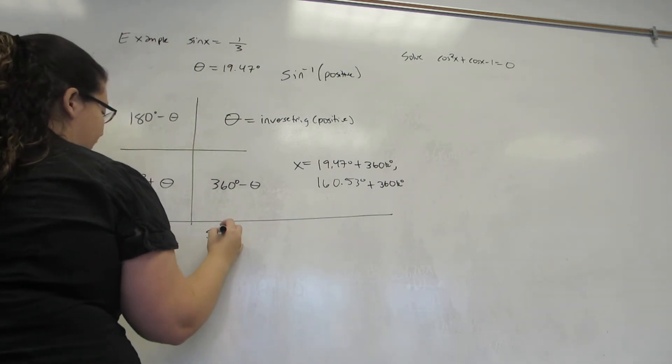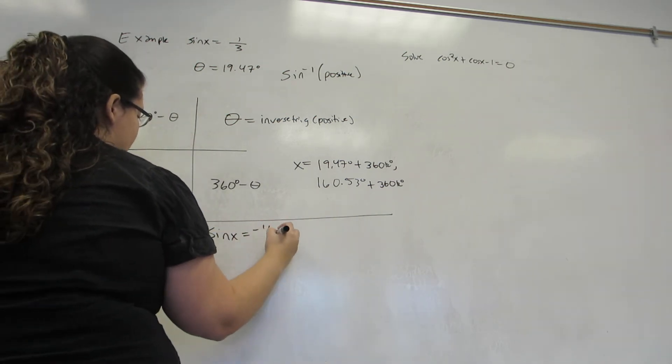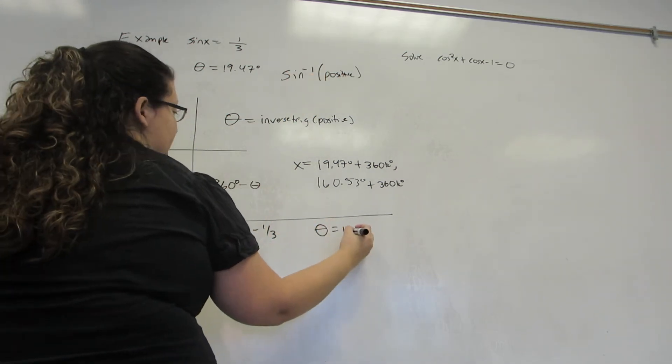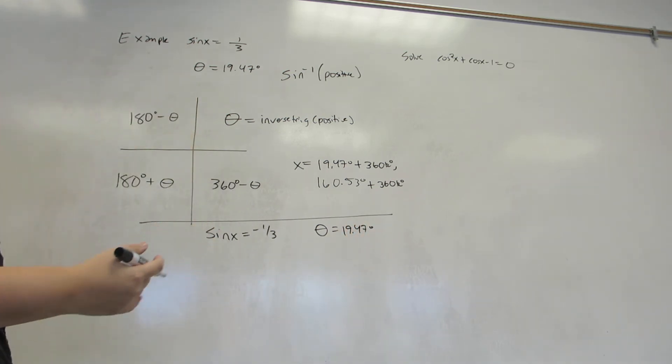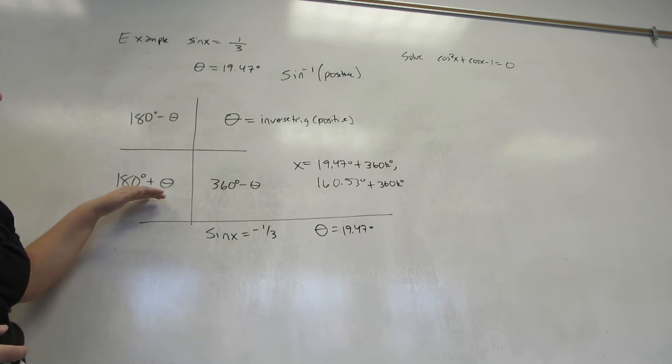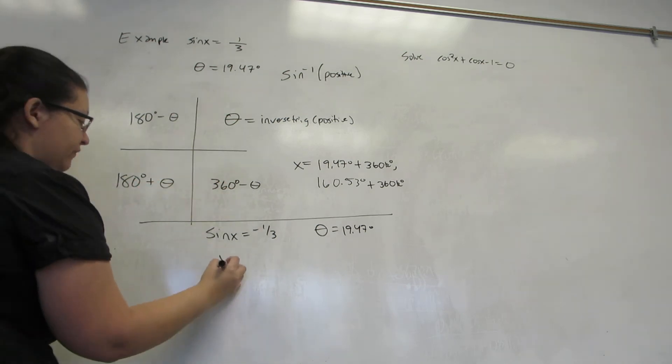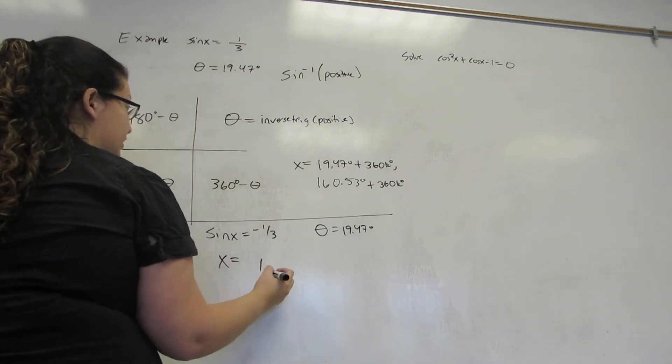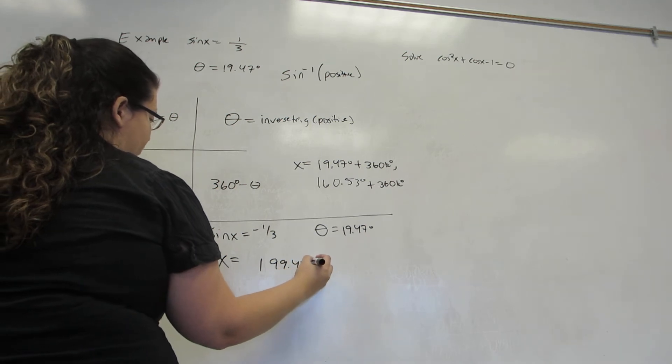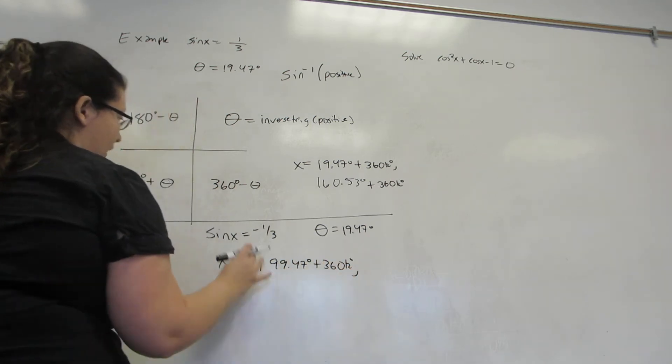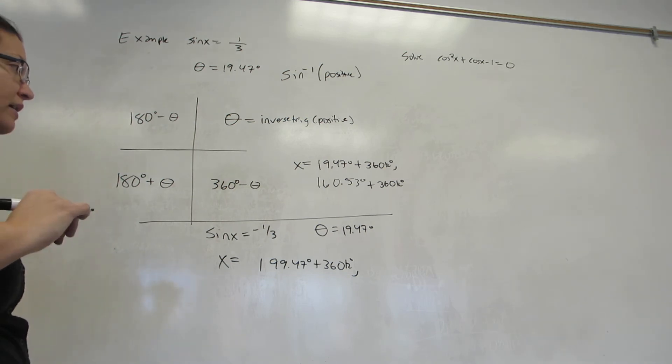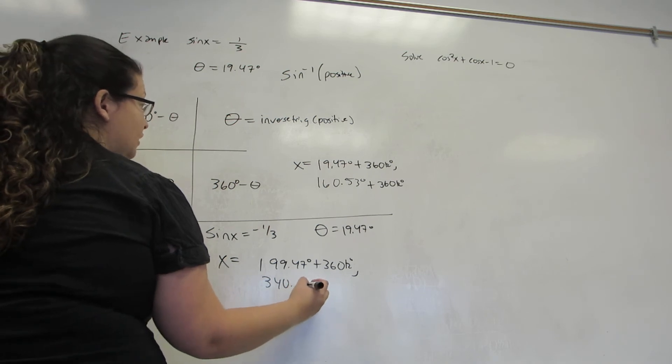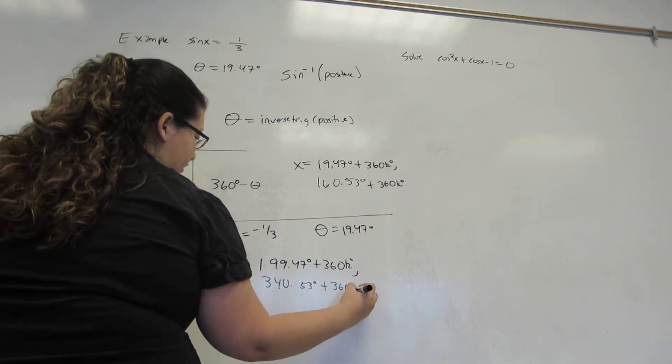Similarly, if I was solving sine of x equals minus one-third, I would still plug sine inverse of positive one-third in and get that theta is 19.47 degrees. The difference would come in that I know that sine is negative in quadrants 3 and 4. So, my values for x would be 180 plus 19.47 degrees, which is 199.47 degrees plus 360k, and 360 minus 19.47 degrees, which is 340.53 degrees plus the 360k.